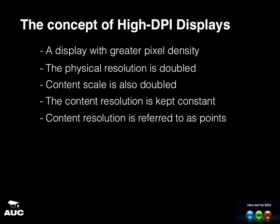To sum up: high DPI displays have the same physical size but with greater pixel density — same size, more pixels. The physical resolution is doubled but the content is also doubled, so you're not gaining more space but getting better definition. The resolution is kept constant, which is really nice. From now on, it's referred to as 'points' not 'pixels,' because now you've got a disjoint between physical pixels and display pixels.